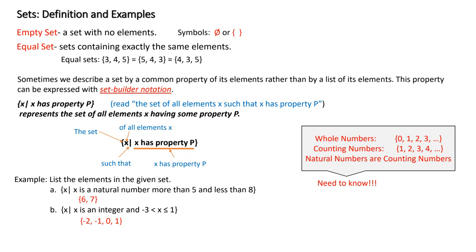Another example: converting from set builder notation to the list method. If I have x such that x is an integer, greater than negative three and less than or equal to one, we have two conditions. It must be an integer between negative three and one. The answer in the list method would be negative two, negative one, zero, and one. You'll see this on your homework.